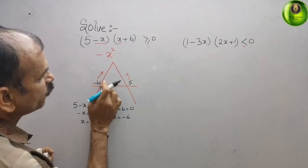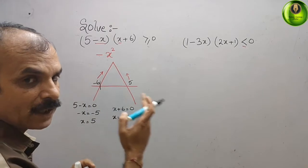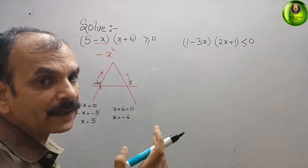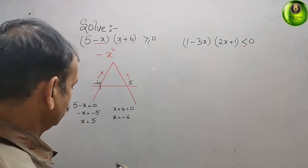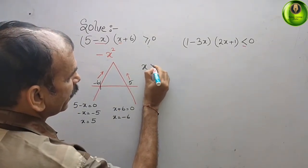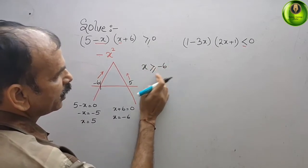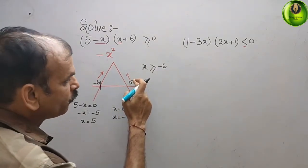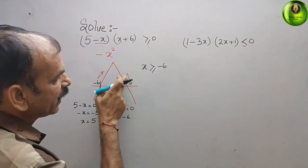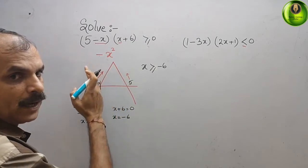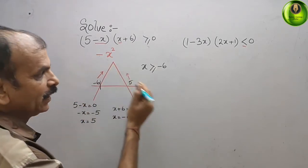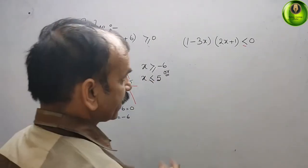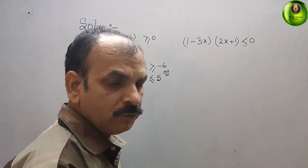Toward this side you get minus 5, minus 4, minus 3, and so on — that means x should be greater than or equal to minus 6. And if you go to the left from 5, you get 4, 3, 2, and 1 — that means x should be less than or equal to 5. So the solution for the first equation is minus 6 ≤ x ≤ 5.